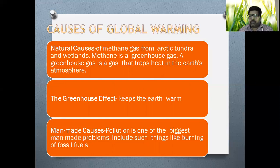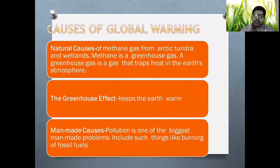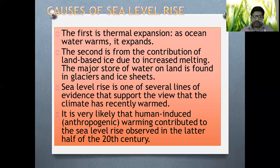In our previous discussions, pollution is the main cause by which human actions have created a substantial change in key elements of the planet: mainly the soil, mainly the water, mainly the air, mainly the habitat, ecosystem, and so on. Therefore, man-made causes include things like the burning of fossil fuels — these are certain man-made causes of global warming.